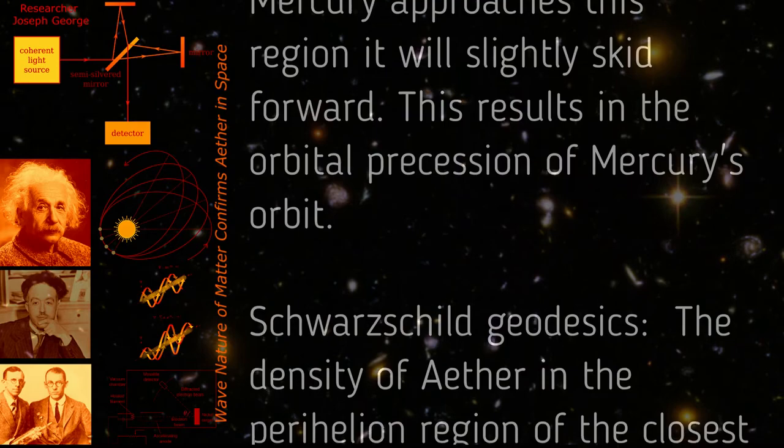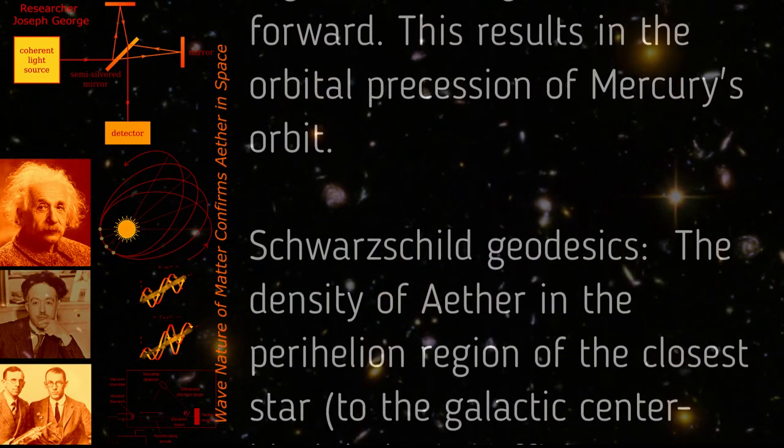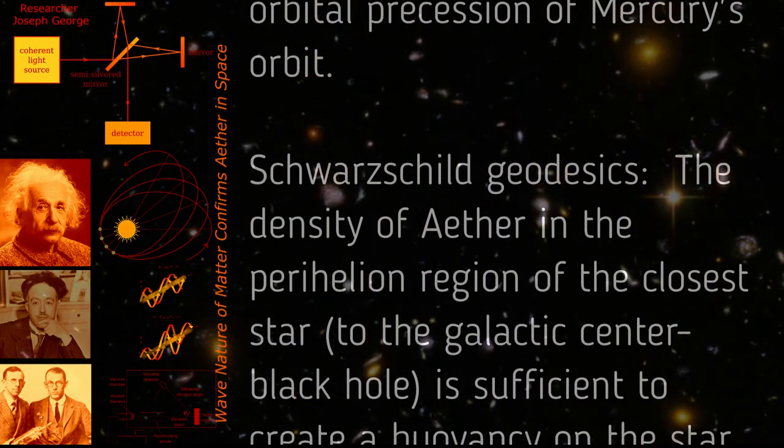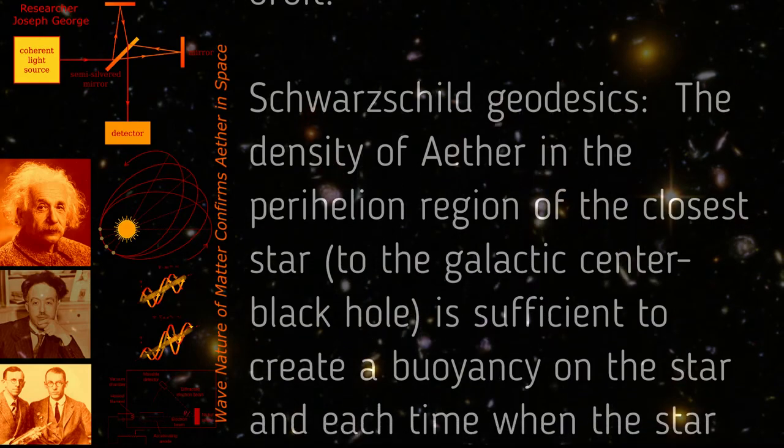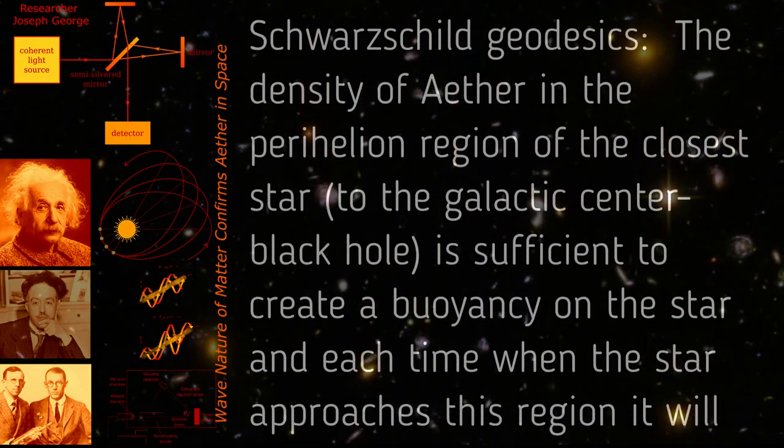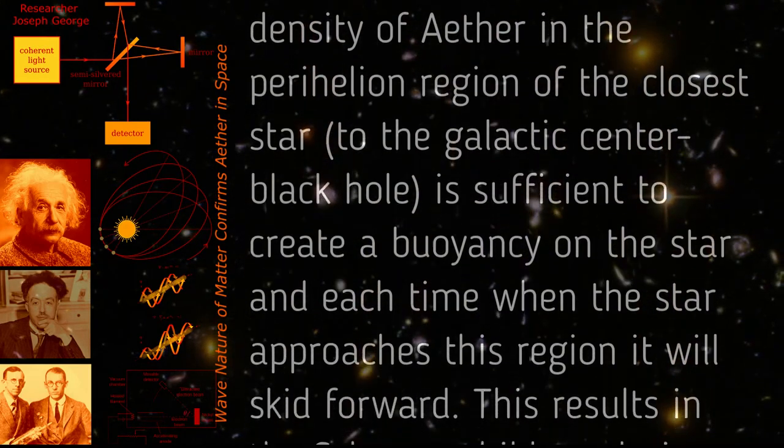Schwarzschild geodesics: The density of ether in the perihelion region of the closest star to the galactic center black hole is sufficient to create a buoyancy on the star, and each time when the star approaches this region it will skid forward. This results in the Schwarzschild geodesics.